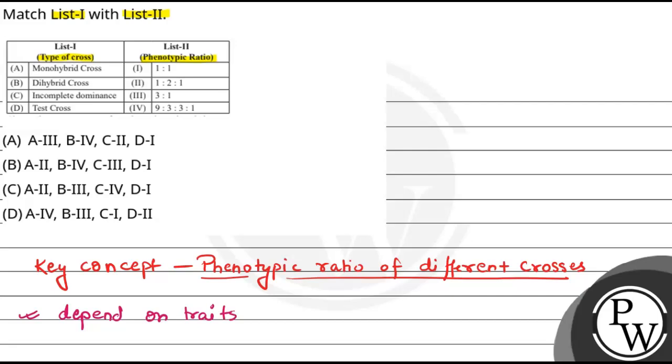First of all, there is monohybrid cross. If we talk about monohybrid cross phenotypic ratio, that will be 3 is to 1. Because we can say that this is the crossing of individuals that differ in only one trait. Monohybrid means there is difference in only one trait.